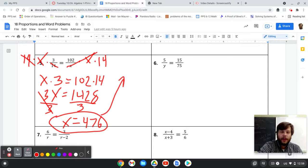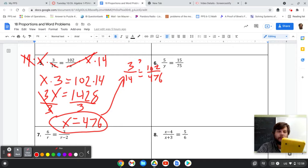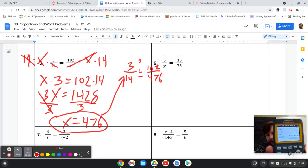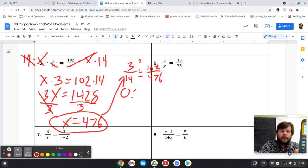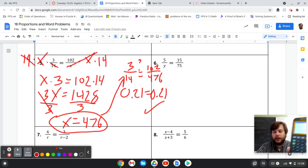Take that answer and check it. Does 3 over 14 equate to 102 over 476? You can just type in 3 over 14, 102 over 476. If you look right there on the calculator, the last two fractions are both equal to 0.21. So it checks out.